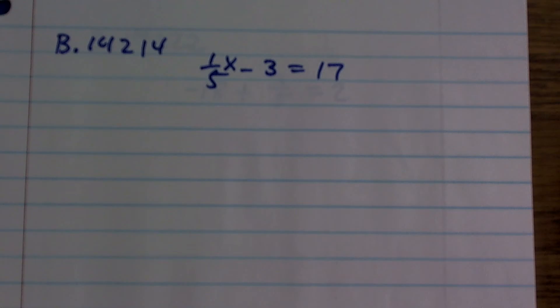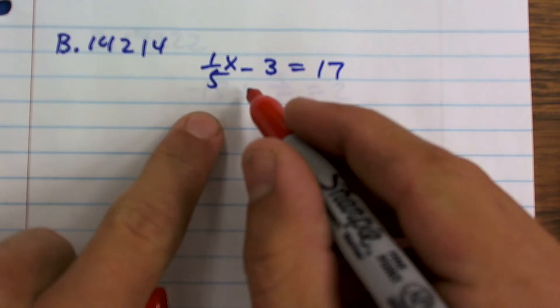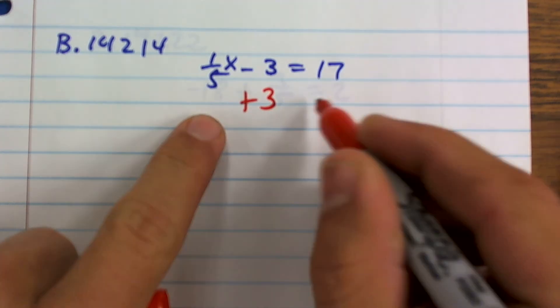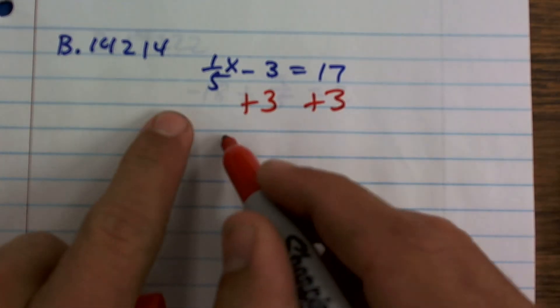What I have here is one-fifth x minus 3 equals 17. Remember, when solving two-step equations, we always got to undo addition and subtraction first by using the reverse order of operations. So here, I have a negative 3 being subtracted from my x. To undo subtracting 3, I'm going to add 3 on both sides.